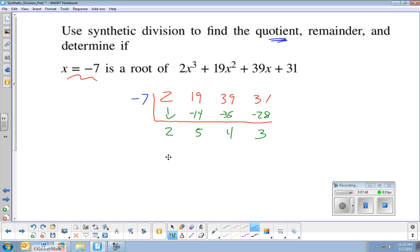The quotients, just putting in the variables around these numbers now, and since we started x cubed, we go one less. So, the quotient would be 2x squared plus 5x plus 4. And the last number is not part of the quotient. It is the remainder is 3. Is it a root of the polynomial? The answer is no, because this is not 0.